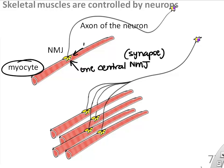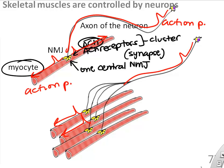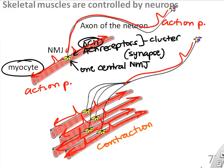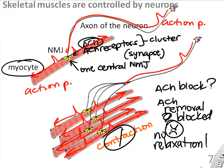Because muscle cells are so long, they only have one neuromuscular junction — one communication point between the neuron and the muscle cell using acetylcholine, which triggers an action potential. Each action potential in a neuron will cause a contraction in the myocyte. If you block acetylcholine, you block contraction; if you block acetylcholine's removal, you block relaxation.